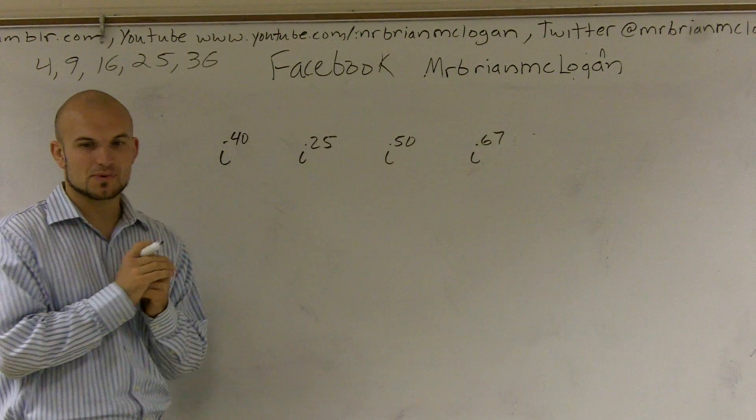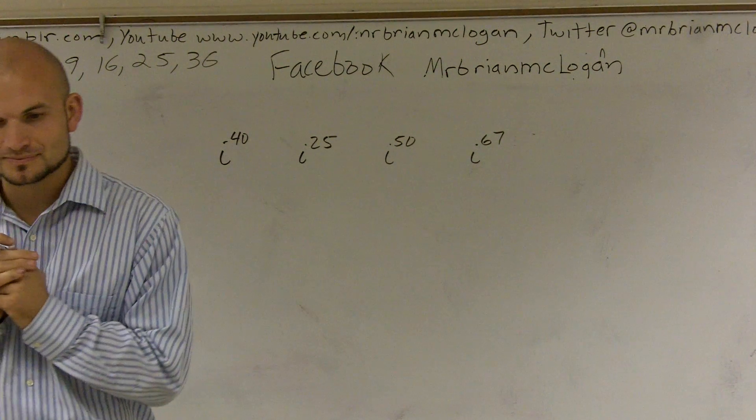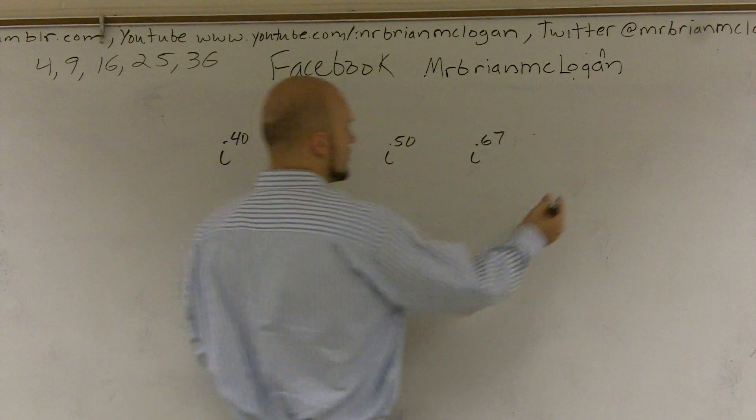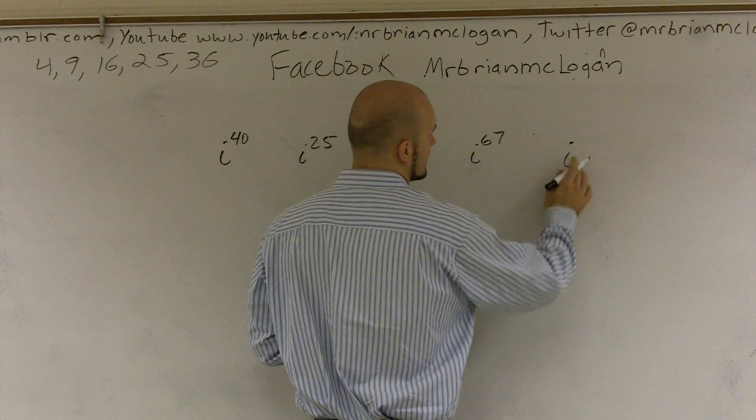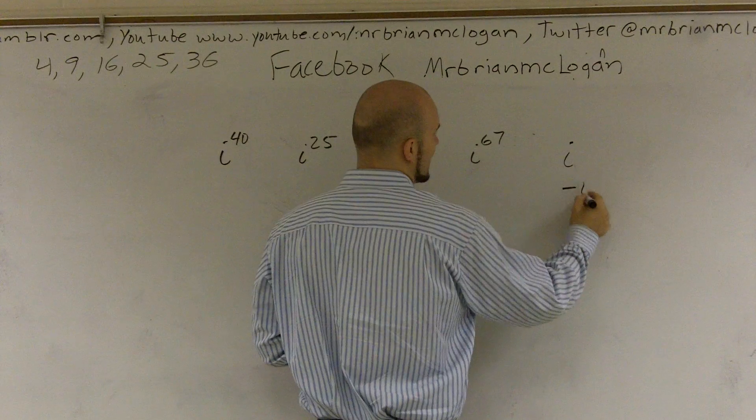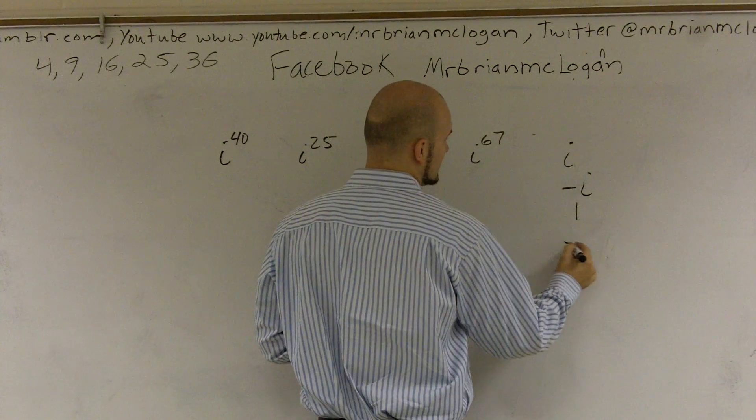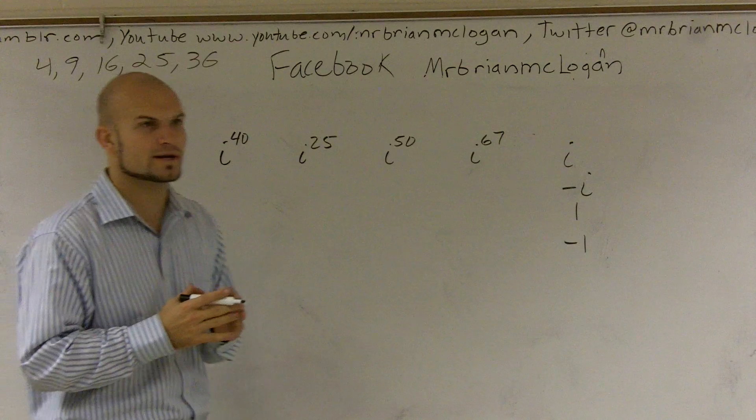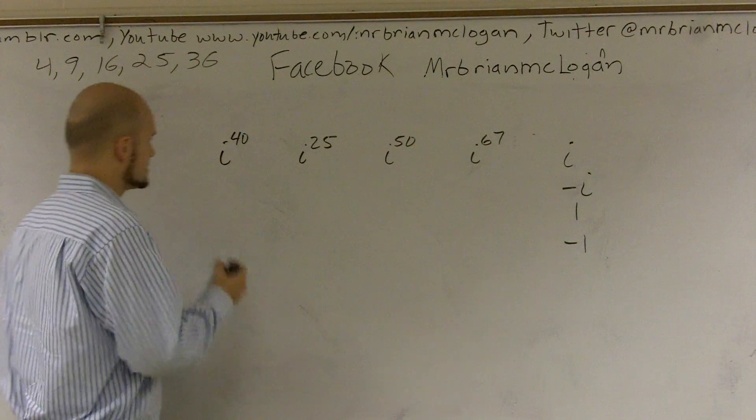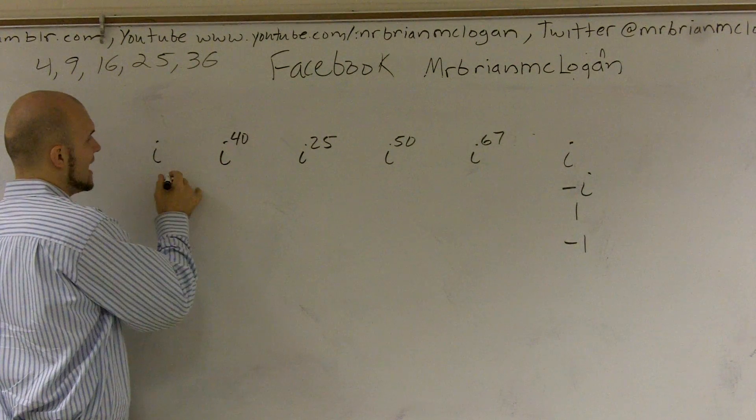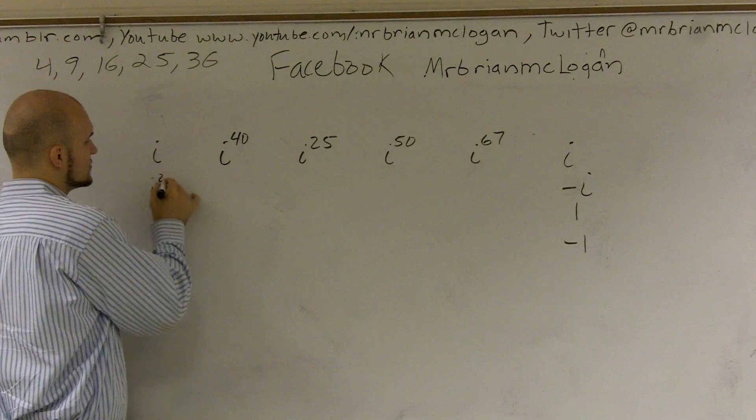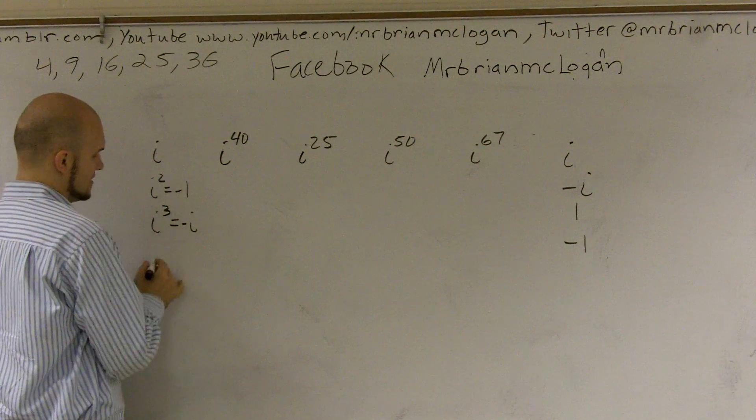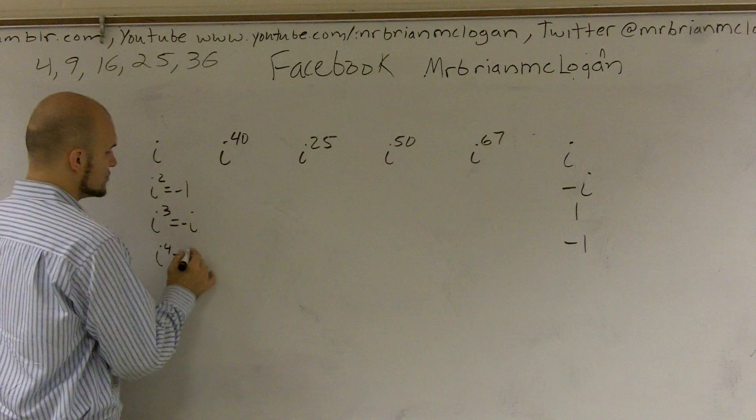Alright, what we're supposed to do here is we want to find the, we're going to express each of these as either a power of i, negative i, one, or negative one. And how are we going to get i, negative i, one, and negative one? Well, what we can do is we can determine: i squared is equal to negative one, i cubed is equal to negative i, and i to the fourth is equal to one.